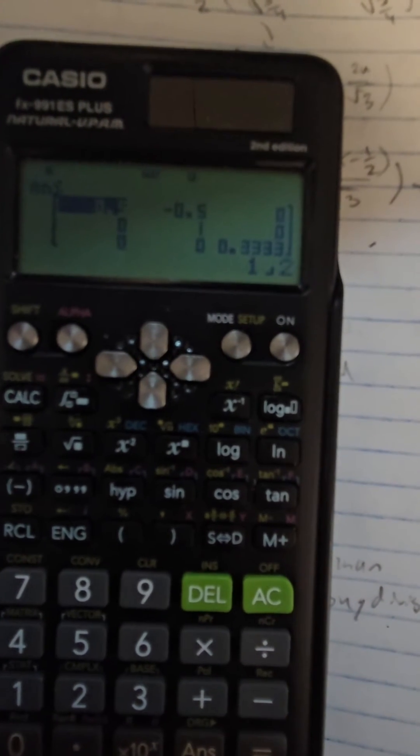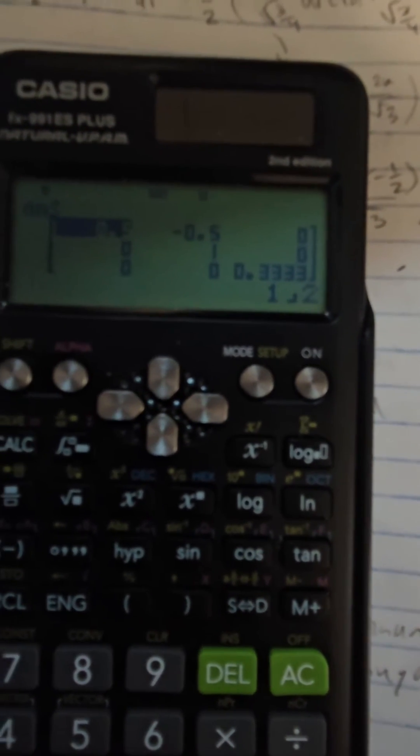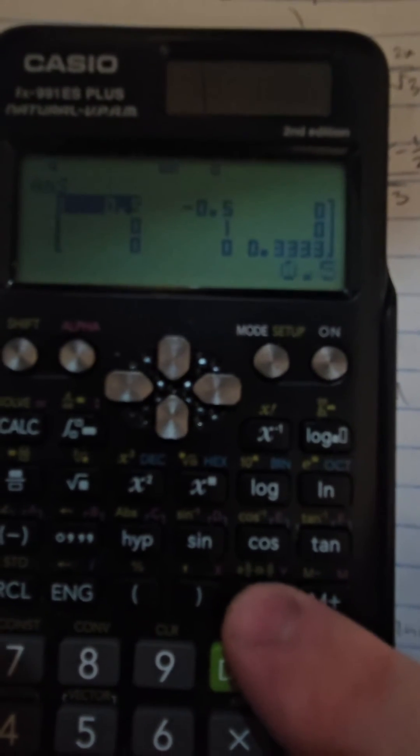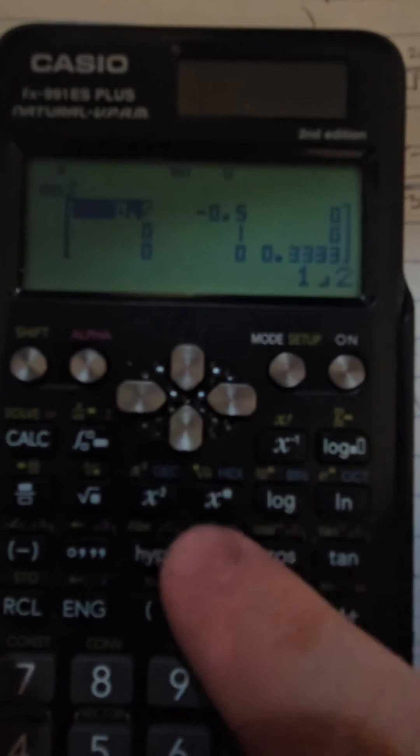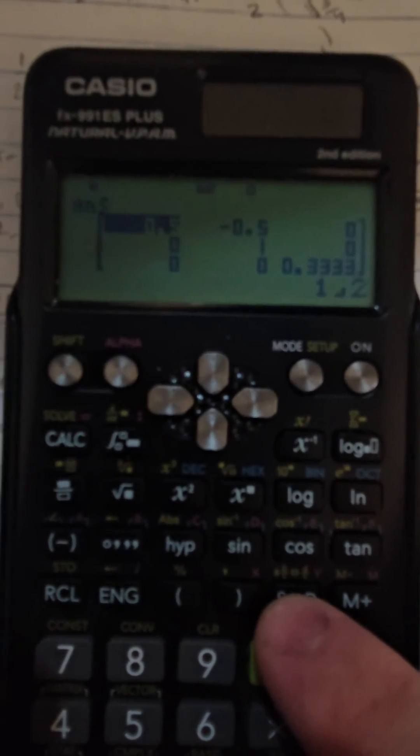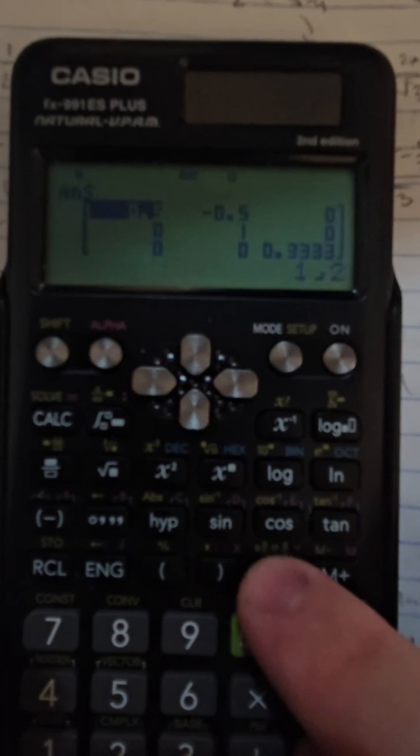Then it computes the inverse matrix. If it's in decimal and you want it in fractions, you press the SD button and it switches.